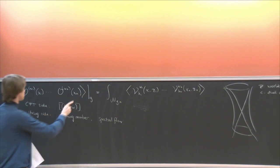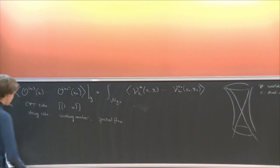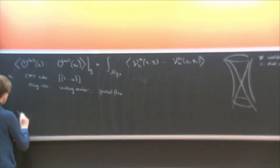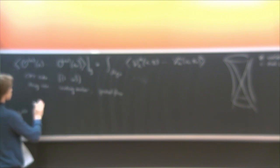Let me explain how the genus expansion goes in the symmetric product orbifold. If I have some twist field in my orbifold, I have some field X living in copy I of the N copies of T4, and I place my twist field at some point X1. If I go around with this field, I pick up some monodromy, and the resulting field is X but with index I transformed by the group element G.